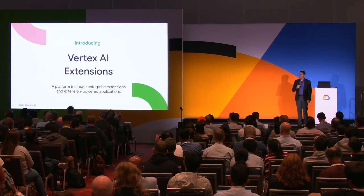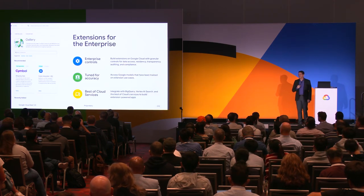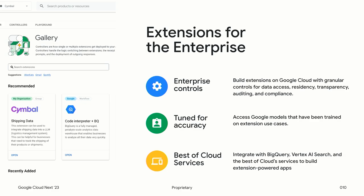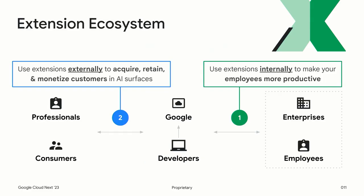That's why we're thrilled to announce Vertex AI Extensions — a Google Cloud platform to create enterprise extensions and extension-powered applications. Vertex Extensions will enable enterprises to build extensions with Google Cloud's granular controls for data access, residency, transparency, auditing, and compliance with internal policies. It will access Google's latest foundational models trained on extension use cases, and integrate with the best of cloud services such as BigQuery and Vertex AI Search. We see Vertex Extensions as a core component of a larger ecosystem spanning enterprises, employees, developers, and end-user professionals and consumers, covering both internal use cases — making employees more productive — and external use cases by extending products into AI surfaces outside your walls.